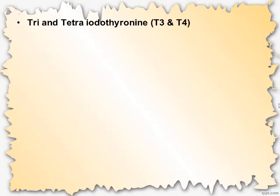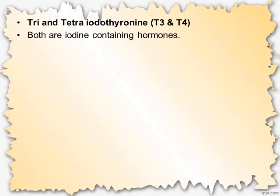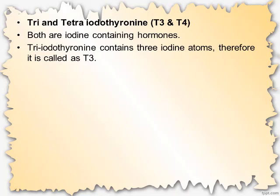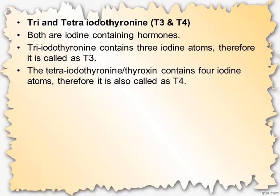T3 and T4 hormones are both iodine-containing hormones. Triiodothyronine contains three iodine atoms, therefore it is called T3 hormone. Tetraiodothyronine, or thyroxine, contains four iodine atoms, therefore it is called T4 hormone.